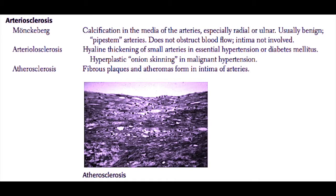Arteriosclerosis is thickening or hardening of the arterial wall, and there are three major causes. The first is Monckeberg arteriosclerosis, which is an idiopathic calcification of the media of the arteries. The arteries commonly involved are the radial and the ulnar arteries. Usually this is a benign process. These patients present with pipe stem arteries, and although the arteries are thickened, generally there is no obstruction of blood flow because the intima, or the innermost portion of the artery, is not involved.